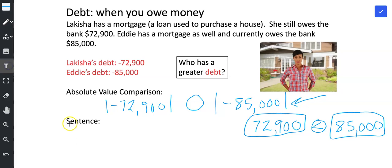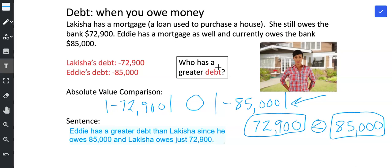So now let me go ahead and record my sentence. The question says who has a greater debt, so I'm going to start by typing the name Eddie. Eddie has a greater debt than Lakeisha since he owes $85,000 and Lakeisha owes just $72,900. And let me go ahead and add that dollar sign as we're comparing those two debts. And now that I've written my absolute value number comparison and I have my sentence, I have completed this story problem.